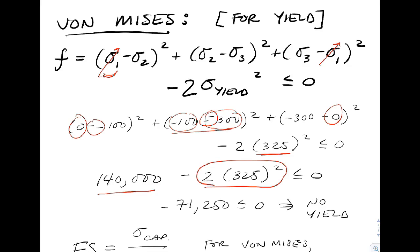We end up with a negative total on the left-hand side, and that would be less than zero. Therefore, there is no yielding anticipated with von Mises. That would make sense.